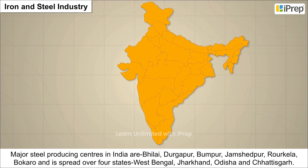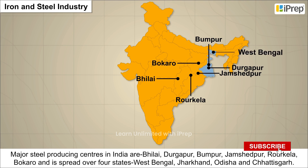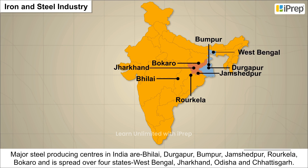Major steel producing centers in India are Bhilai, Durgapur, Burnpur, Jamshedpur, Rourkela, and Bokaro, spread over four states — West Bengal, Jharkhand, Odisha, and Chhattisgarh.